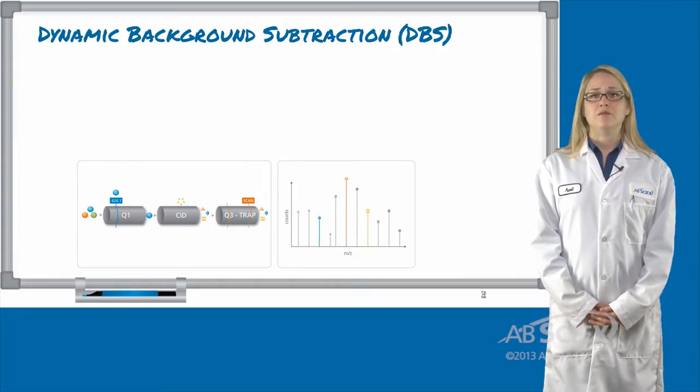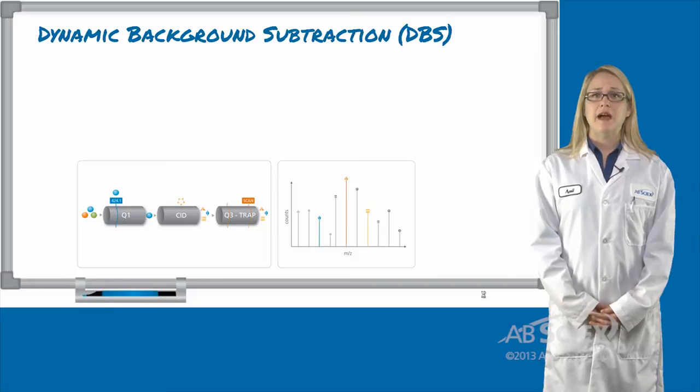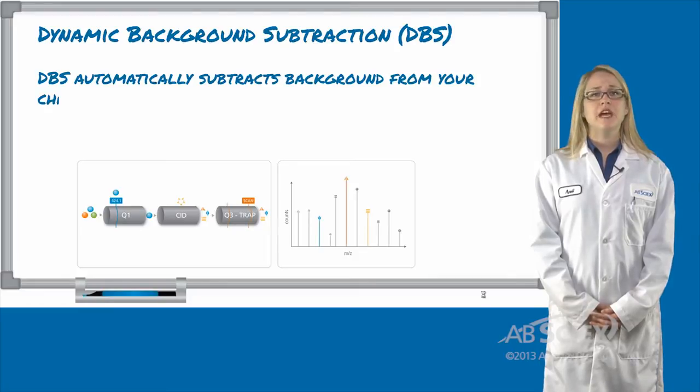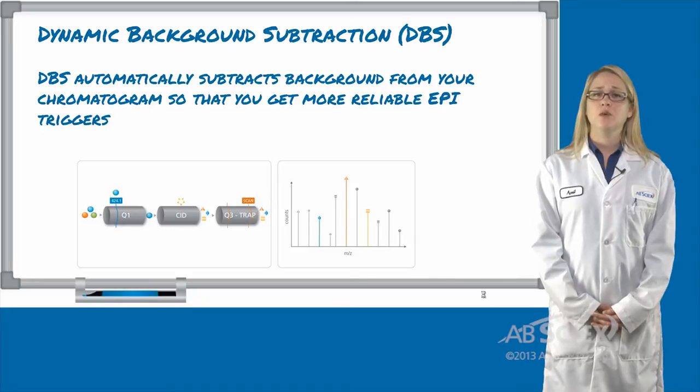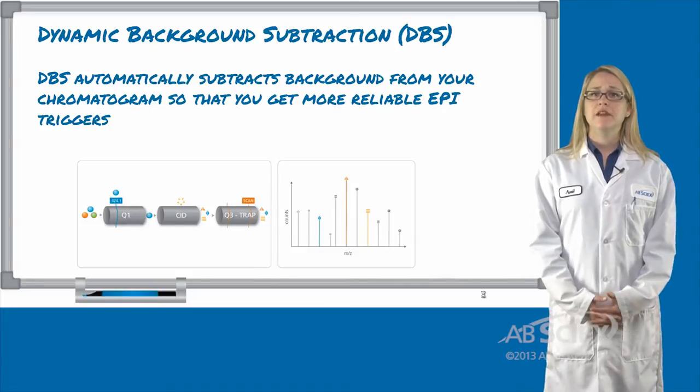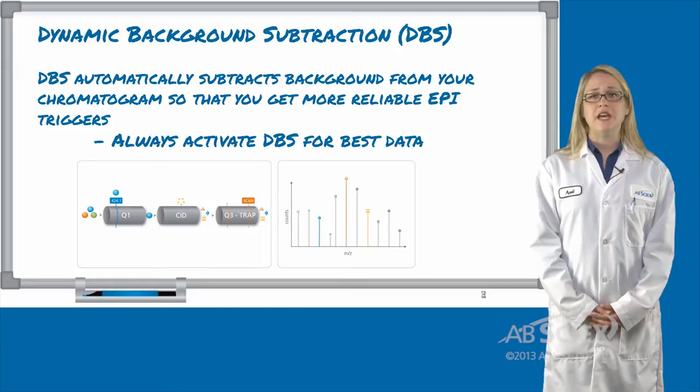Dynamic background subtraction, or DBS, automatically subtracts background from your chromatogram so you get more reliable EPI scans triggered, particularly when you have coeluting MRMs. DBS should always be activated to get the highest quality data.